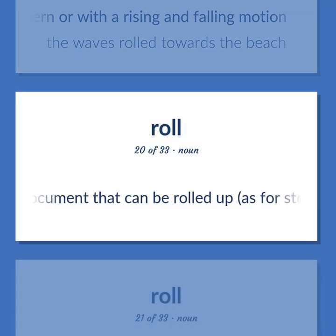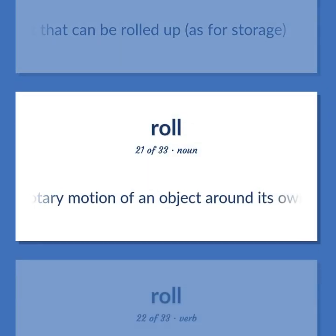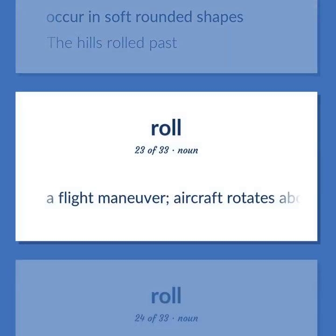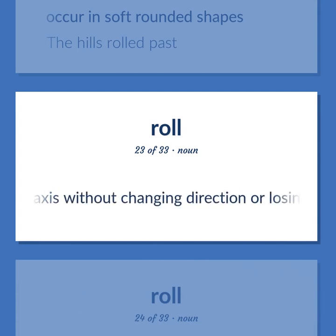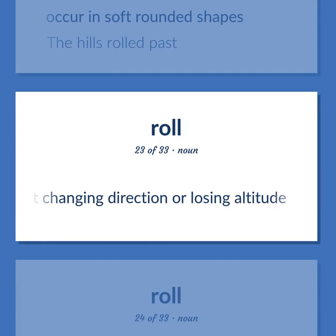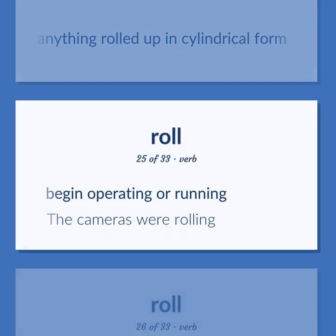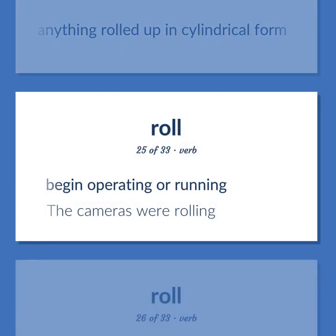Roll: a document that can be rolled up as for storage. Rotary motion of an object around its own axis. To occur in soft rounded shapes — the hills rolled past. A flight maneuver in which an aircraft rotates about its longitudinal axis without changing direction or losing altitude. Anything rolled up in cylindrical form. To begin operating or running — the cameras were rolling.